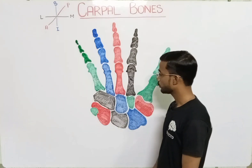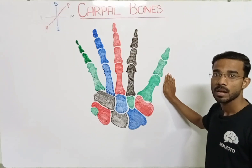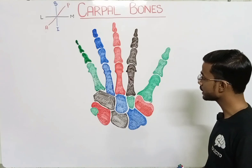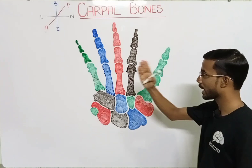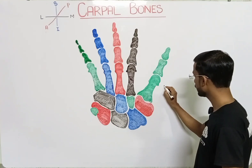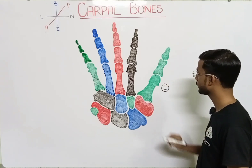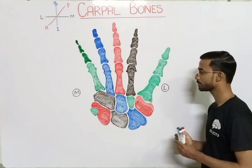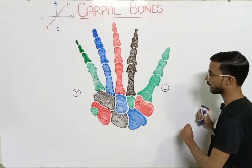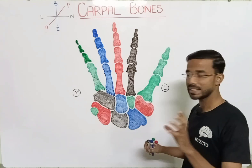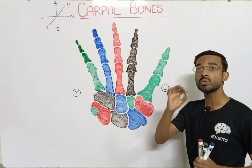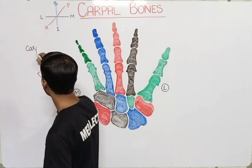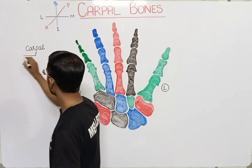We start from the palmar aspect of the hand — this is actually the right hand. As we have discussed, this is the lateral side of the hand and this is the medial side. Lateral means away from the center of the body.